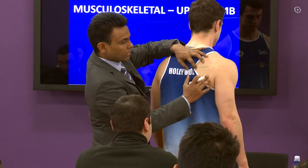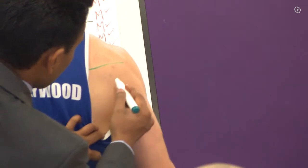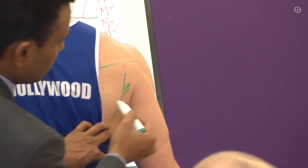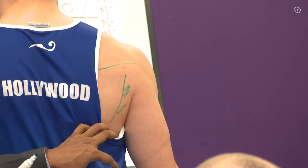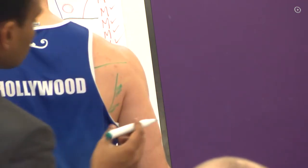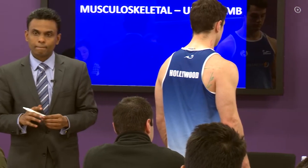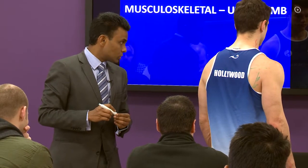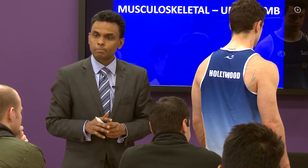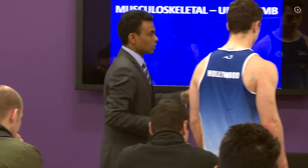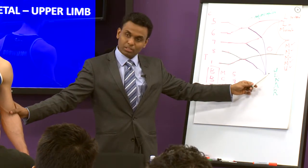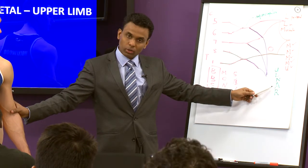That's supraspinatus and infraspinatus. That's the edge of the scapula. What muscles are these? Teres minor and teres major. Teres minor is supplied by the axillary nerve, and teres major is supplied by the lower subscapular nerve. The lower subscapular nerve supplies subscapularis as well as teres major. The axillary nerve supplies deltoid as well as teres minor.